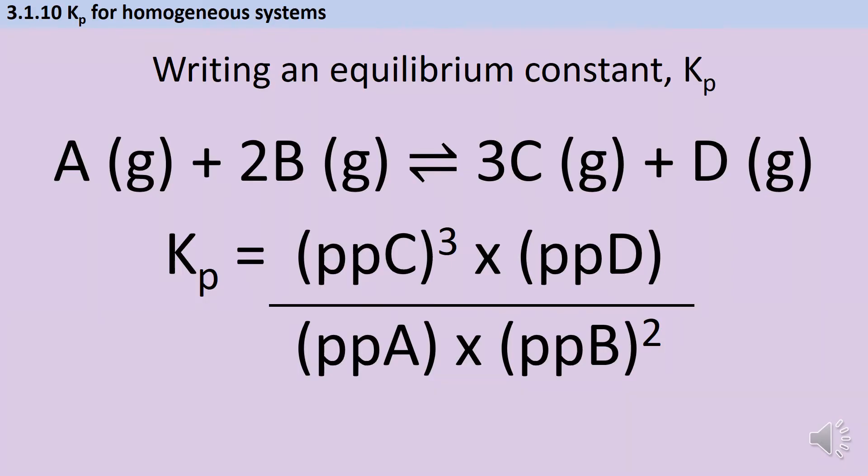Kp is a mathematical expression used to describe the position of equilibrium for a reversible reaction where the reactants and products are gaseous. In the previous video we saw that we could construct this expression by multiplying the partial pressures of the products, taking into account any coefficients used as powers, and then dividing this numerator by the product of the partial pressures of the reactants.